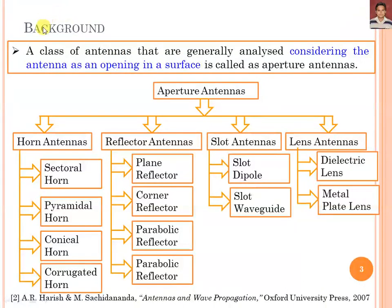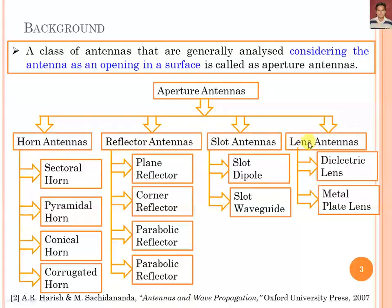In the background, a class of antenna that is generally analysed by considering the antenna as an opening in a surface is called an Aperture Antenna. Through this we can analyse the aperture of the antenna structure. The aperture contains an opening in a surface, and we can categorise Aperture Antennas mainly into four categories: Horn Antenna, Reflector Antenna, Slot Antenna, and Lens Antenna.